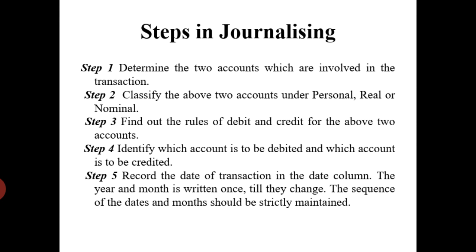Step 3: find out the rules of debit and credit for the above two accounts. Step 4: identify which account is to be debited and which account is to be credited. Step 5: record the date of transactions in the date column. The year and month is written once only — at the top of the book. The sequence of dates and months should be strictly maintained. At the end of each page, both debit and credit columns are totaled up and these totals must be equal.